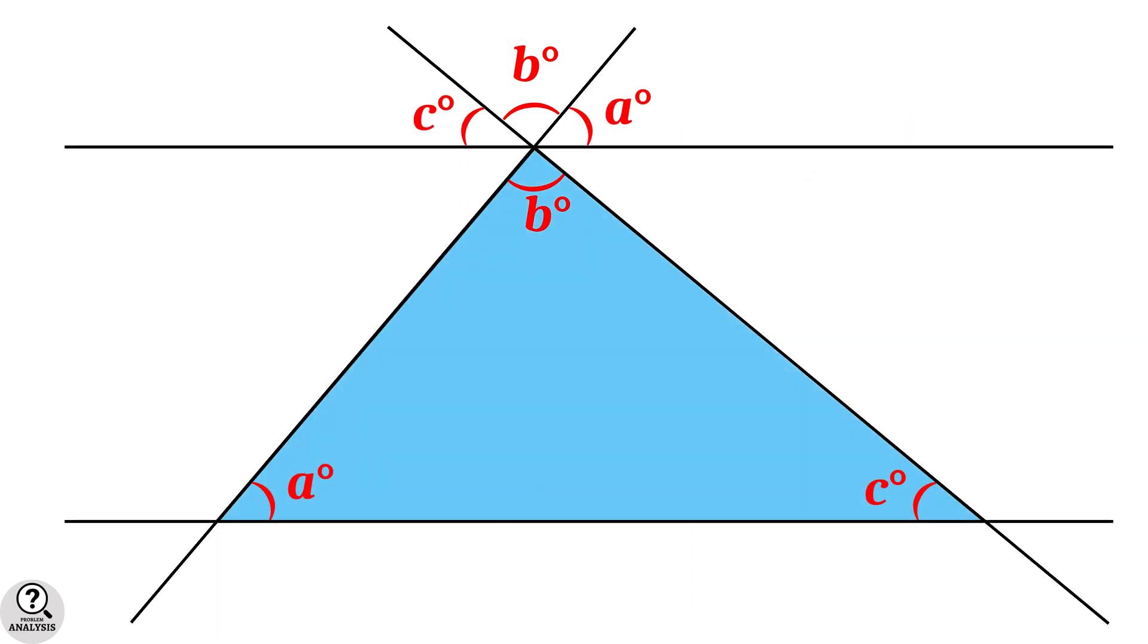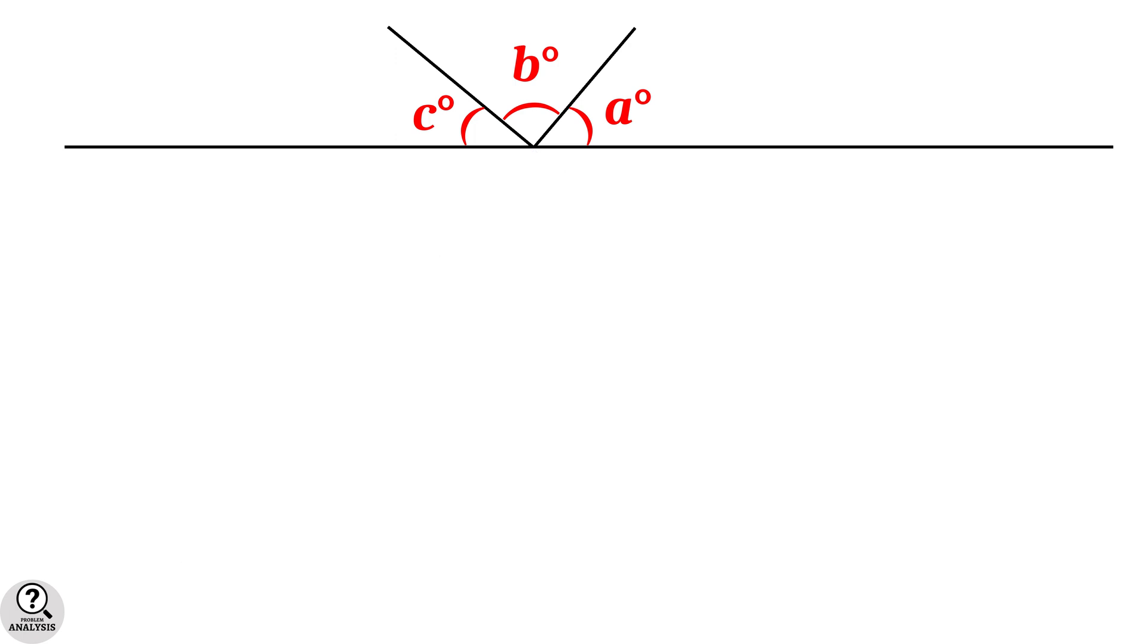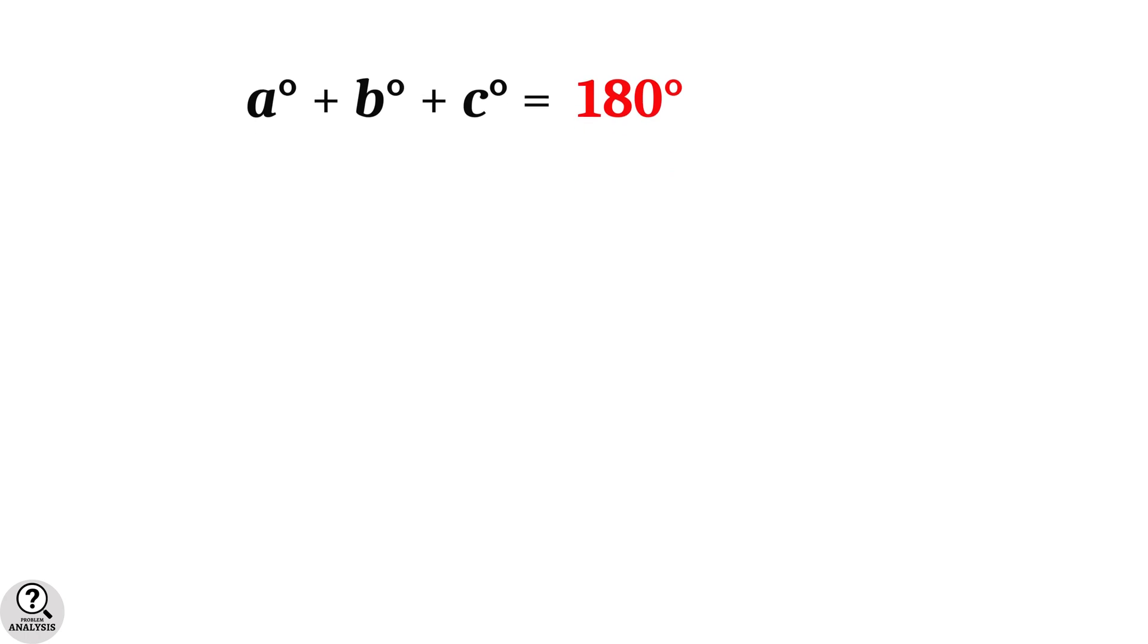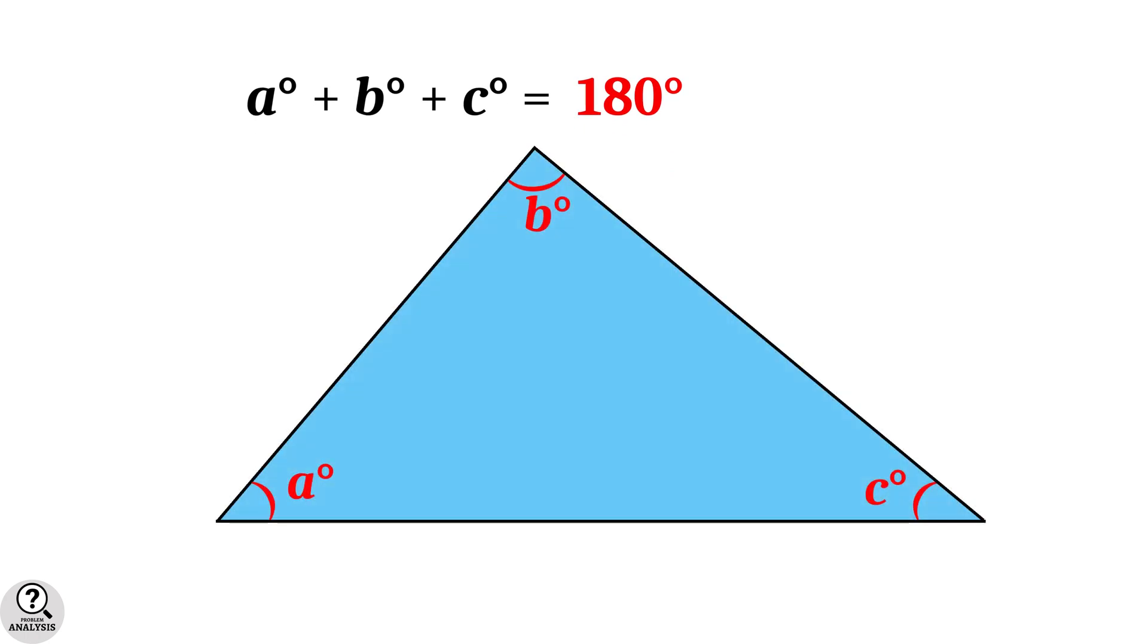Now everything is very clear. Observe the angles above the top line. Since the angle on a straight line is 180 degree, then it is clear that the sum of these angles is 180 degree. That is, a degree plus b degree plus c degree is equal to 180 degree. And that is why the sum of angles in any triangle is always 180 degree.